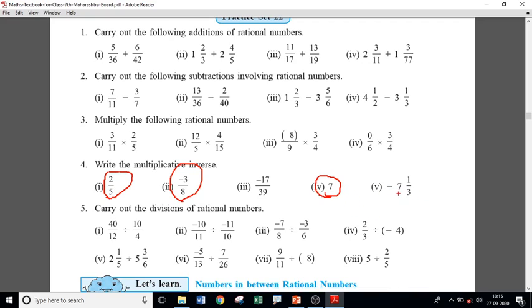And what about this number? Minus 7, 1 upon 3. What will be the answer? To find out the multiplicative inverse of minus 7, 1 upon 3, first of all, all you have to do is you have to convert this into fraction. This is a mixed number, you have to convert it into fraction.